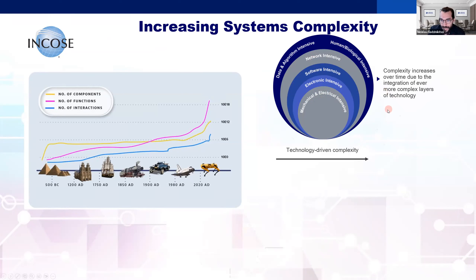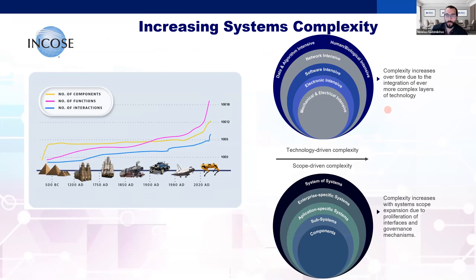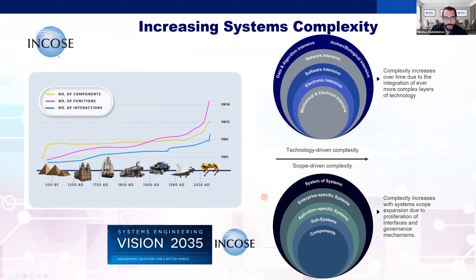There is also a scope-driven dimension: previously the focus was on single components, which are now integrated into systems, systems integrating with other systems, and with bigger systems. This drastically increases interactions and becomes very complex to manage — a vision shared in the INCOSE 2035 systems engineering outlook.